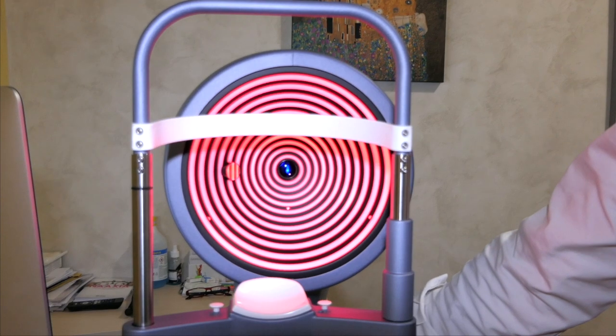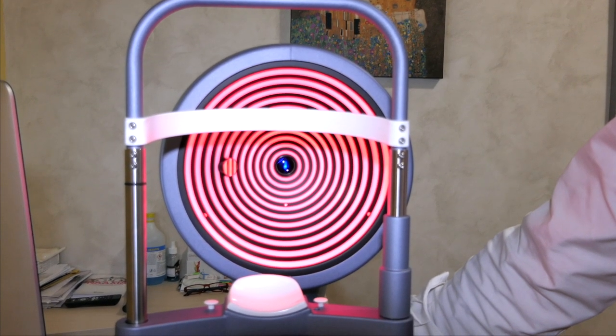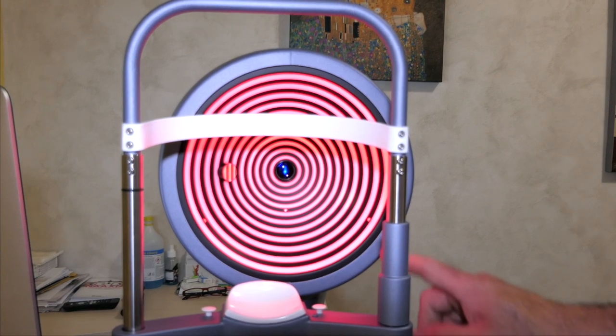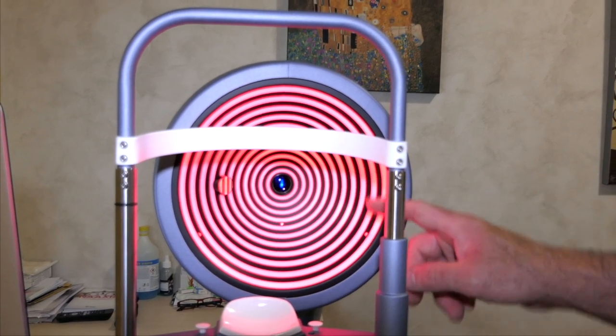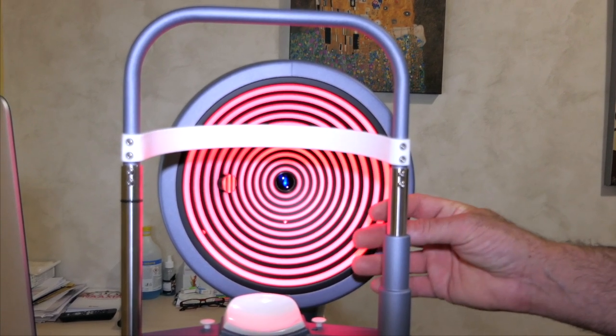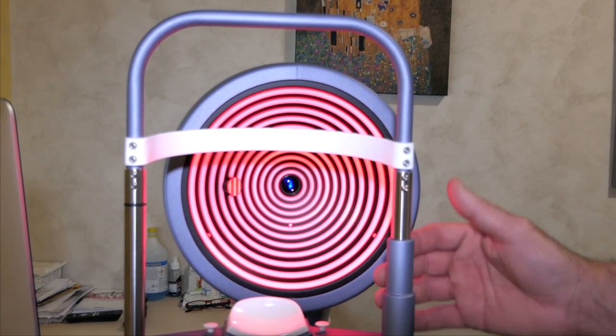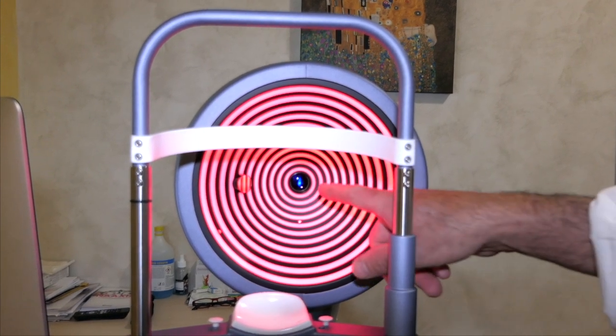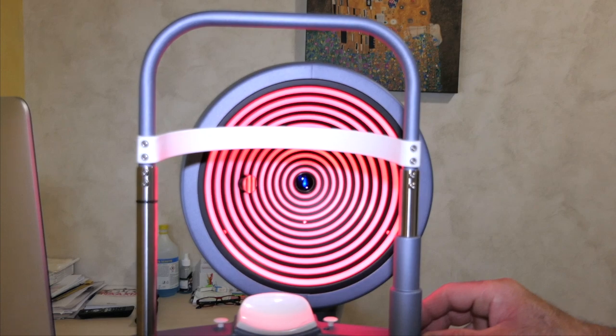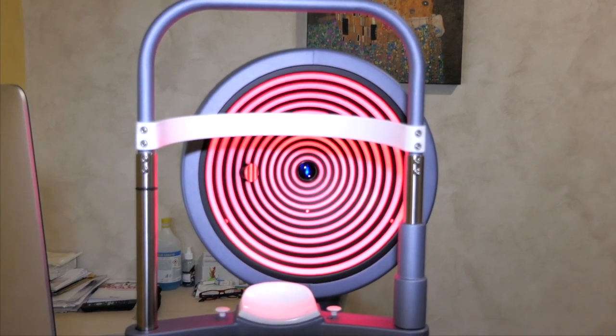This altitudinal topograph combines two technologies. The first technology, an ancient one, is that of Placidus discs. These concentric circles are projected onto the cornea and reflected by it, and the machine captures them through a camera that is in the center.